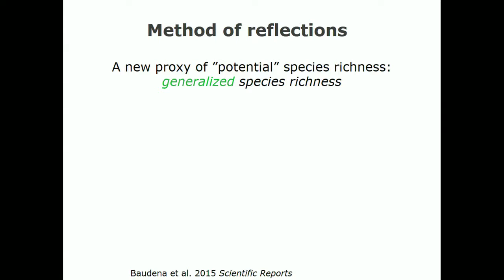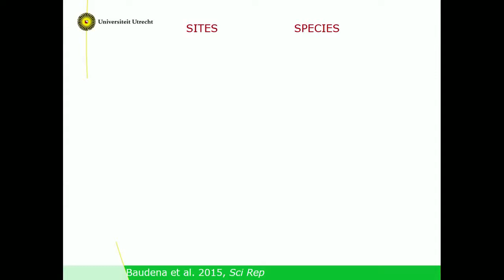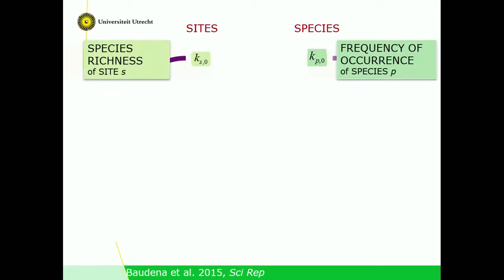The method compares many communities according to taxonomic composition throughout the dataset. It starts from the species richness of a site — local information. You start with the presence-absence matrix of species into sites. Two basic quantities: count the species in the site (species richness) and count how many sites a species occurs in (frequency of occurrence).